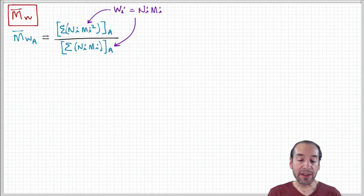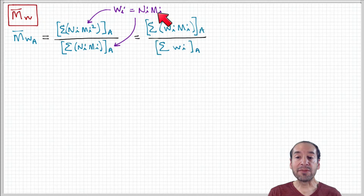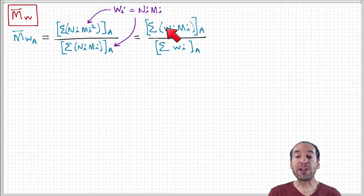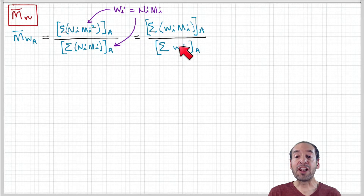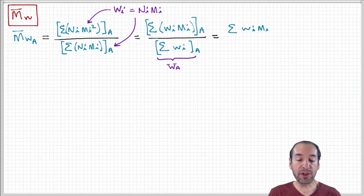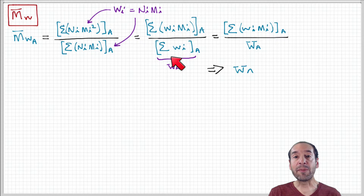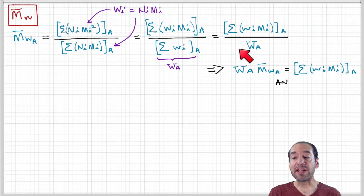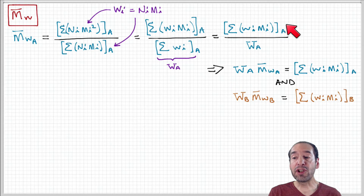Remember that the product Ni·Mi is a weight because it's moles times grams per mole. So we can substitute that in, and we end up with, in the numerator, the sum of the product of the weight of polymer that has molecular weight Mi times Mi, divided by the sum of the weights of polymer in each of those bins in our distribution function. That gives us the total weight of polymer A in the denominator. We can rearrange this and solve for the summation of the product of Wi·Mi for polymer A.